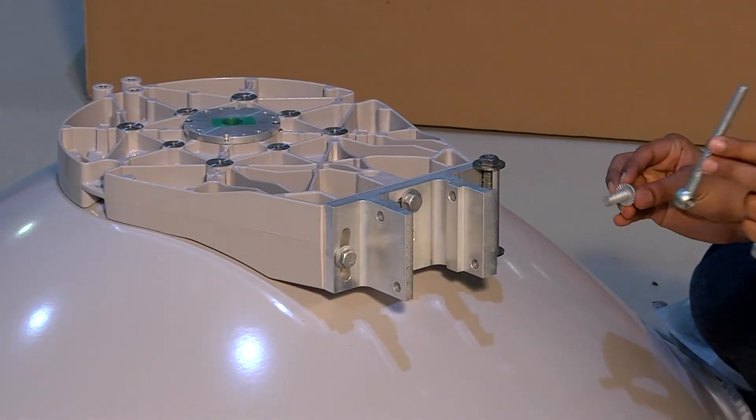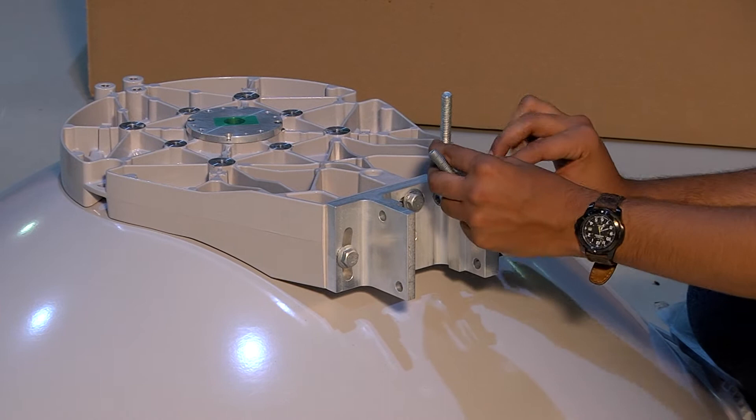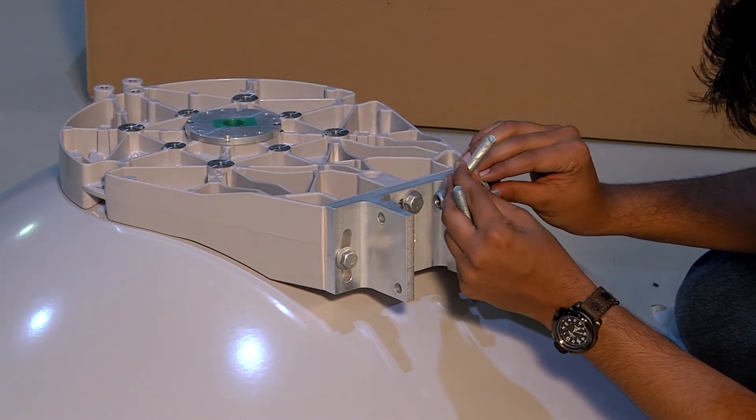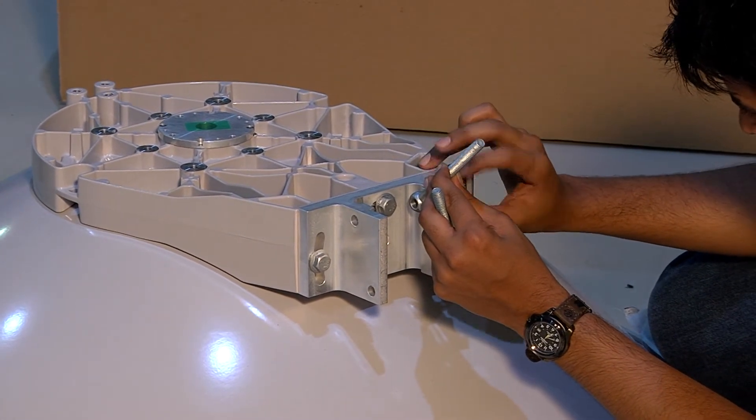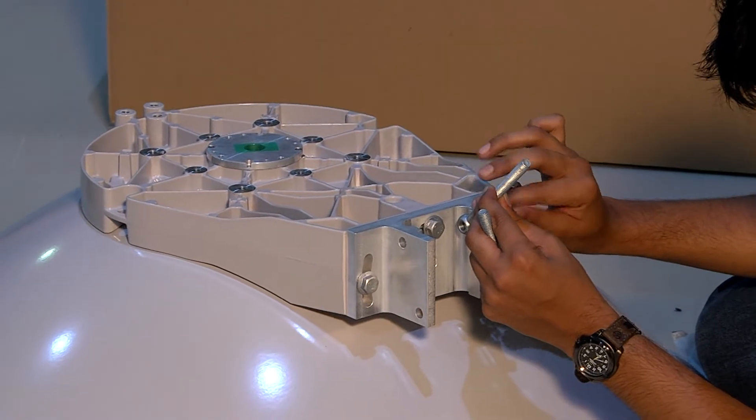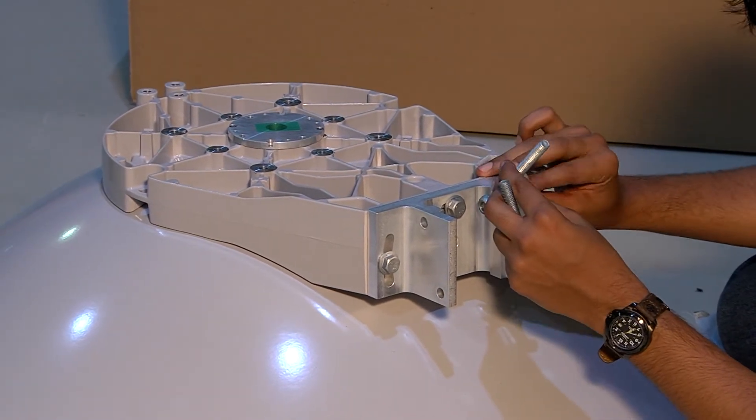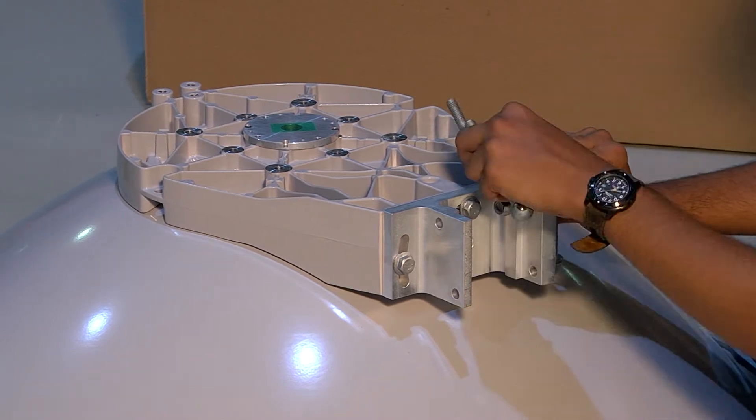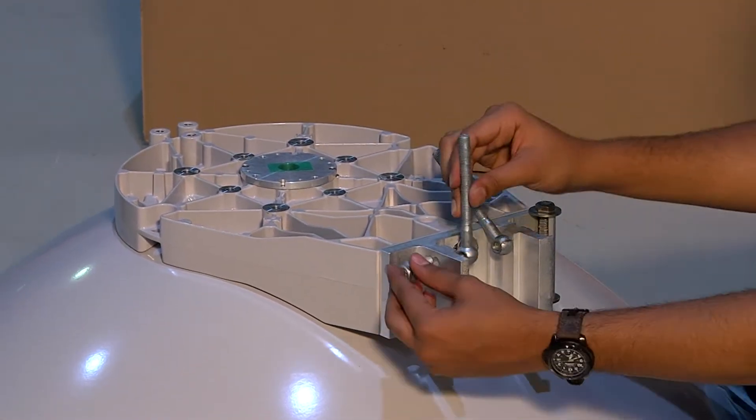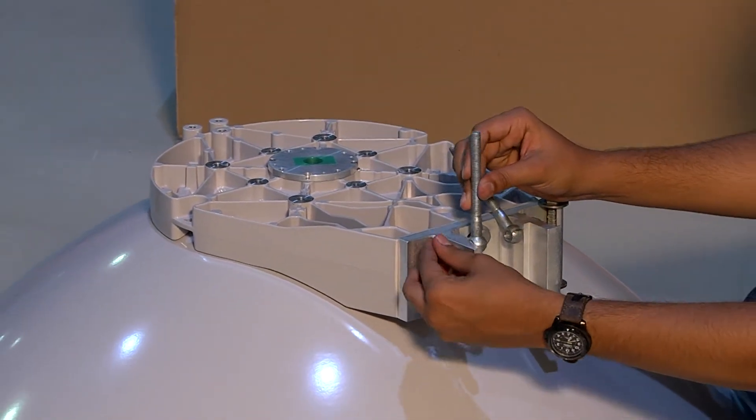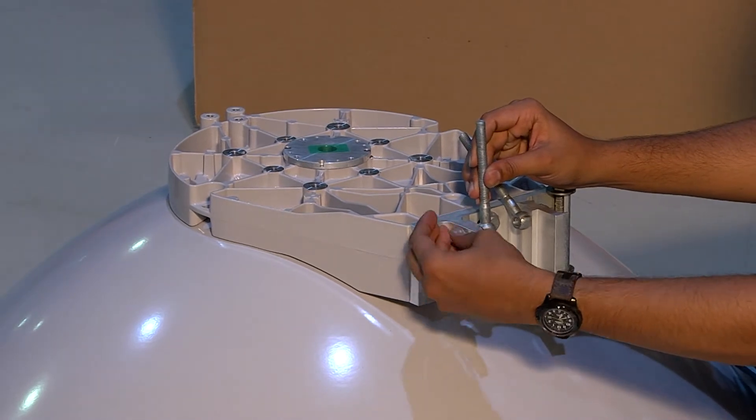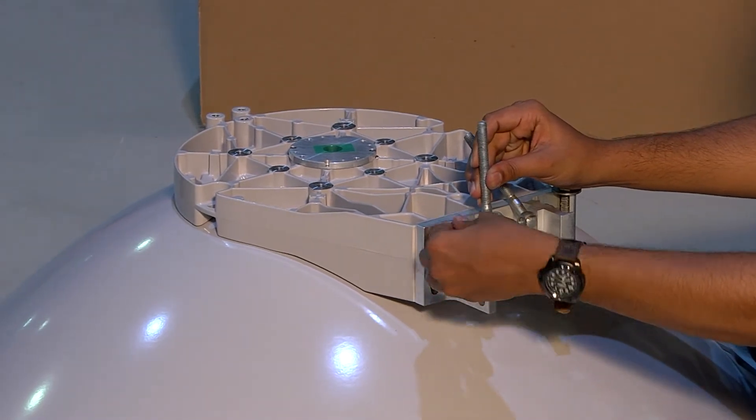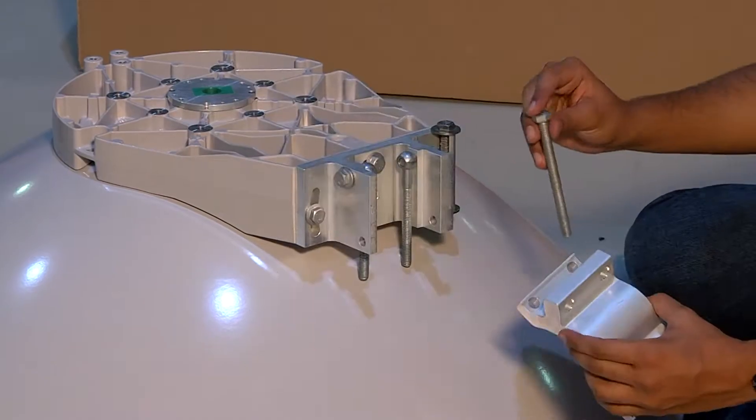Then we mount the M10 link screws using two pieces of M10x30 screws as shown. There are two link screws. The screws are fit loosely.